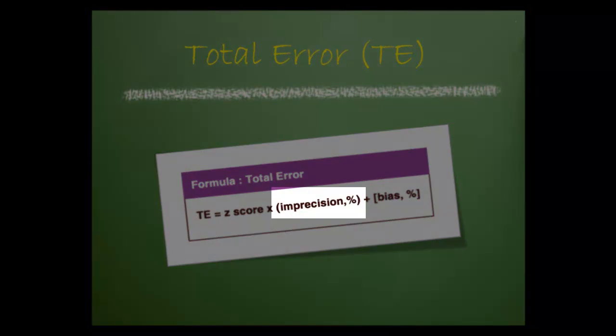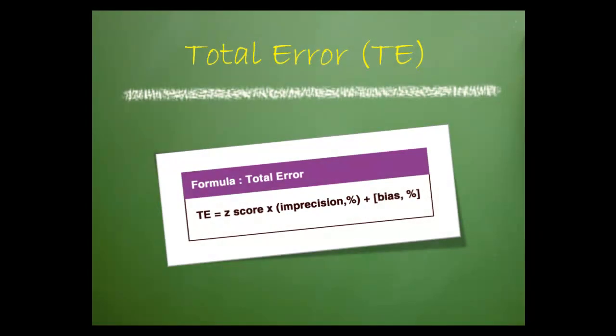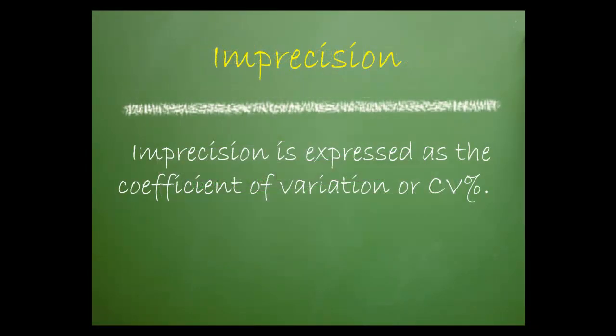The second component of the equation is imprecision. Imprecision is expressed as a coefficient of variation, or CV.